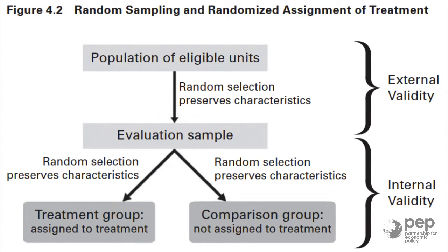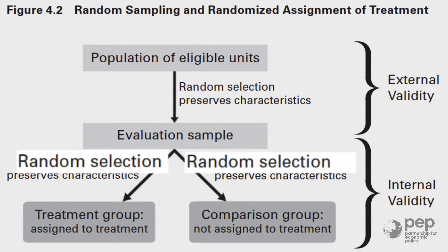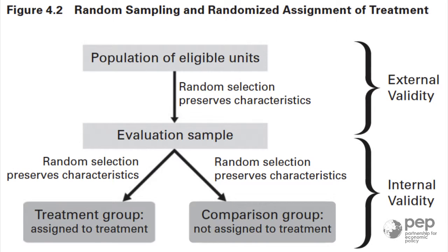The key of internal validity is to have a good counterfactual. Random assignment gives us the best counterfactual that any evaluation technique can buy. This result is actually very powerful — be strict on your randomization when assigning treatment and control, and you can be sure that your counterfactual is valid.